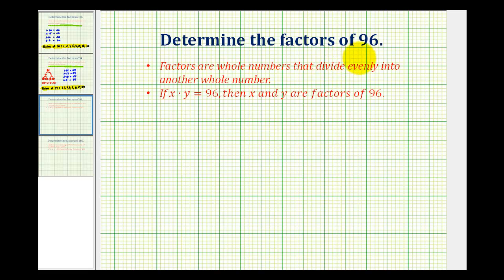We want to determine the factors of 96. Factors are whole numbers that divide evenly into another whole number. So we want all the whole numbers that divide evenly into 96. It's also true that if x times y equals 96 and x and y are whole numbers, then x and y would be factors of 96.